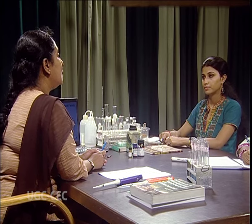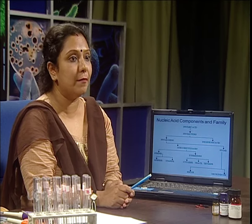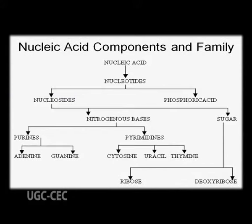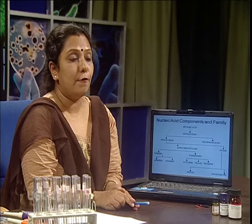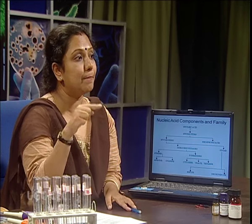Nucleic acid is actually made by nucleotide components. Nucleotide means nucleoside attached by phosphodiester linkage, and nucleoside is nothing but sugar plus nitrogenous base. This particular sugar may be deoxyribose sugar or ribose sugar. The bases may be purine or pyrimidine. Purine bases may be adenine or guanine, and pyrimidine bases may be cytosine, uracil, and thymine. In case of DNA, we find the presence of thymine, but that base is replaced by uracil in case of RNA.